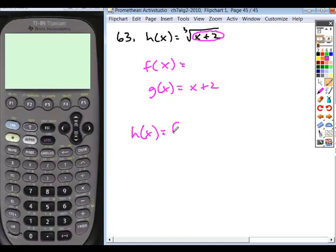h of x has to be f of g of x. So what that means is I'm going to take my function g, which is x plus 2, and I'm going to replace that everywhere there's an x in my f function. It doesn't get multiplied by the x or added to it or anything. It replaces it.